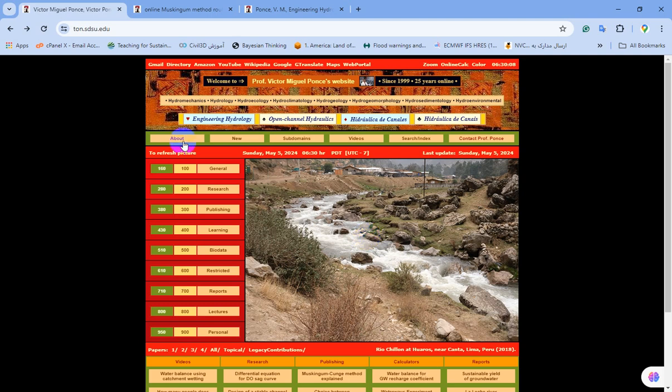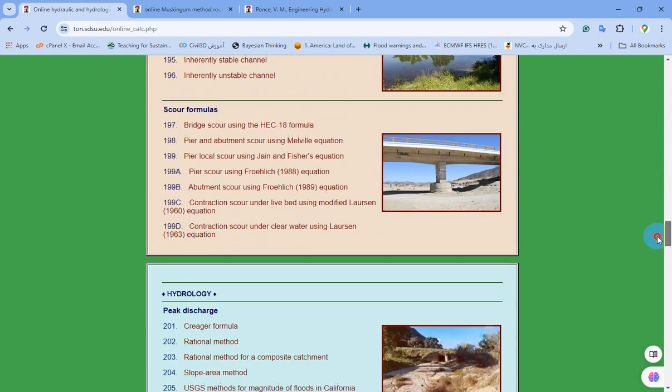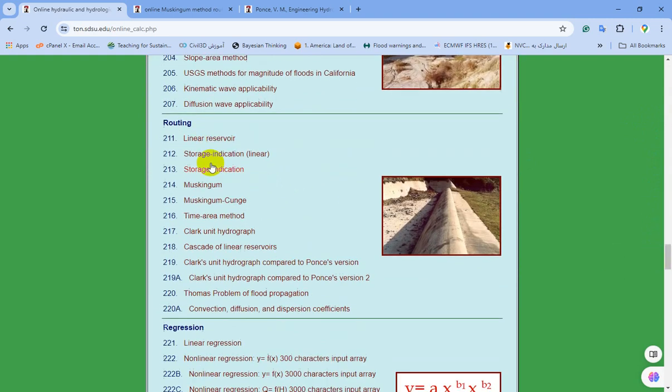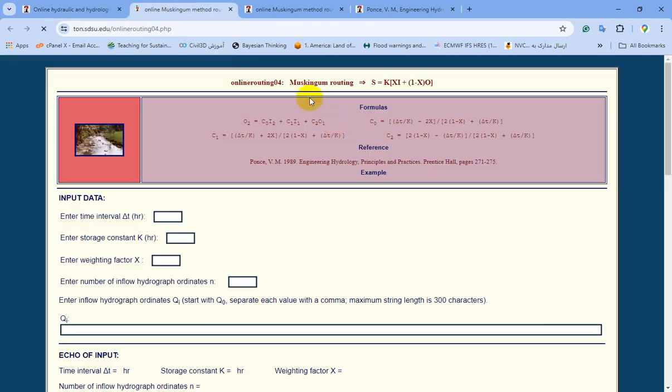Just search this website on the internet. This website belongs to Professor Miguel Ponce. You need to click on Online Calc on the top section of the site, scroll down, and go to the hydrologic section where you can find a routing section for different methods. In this video, I want to focus on the Muskingum method.